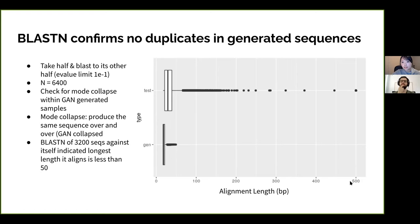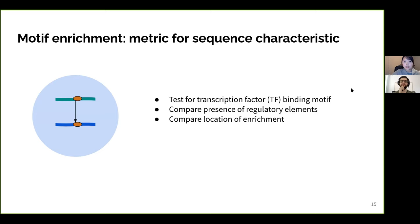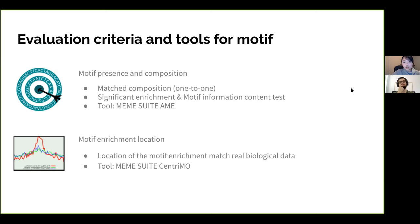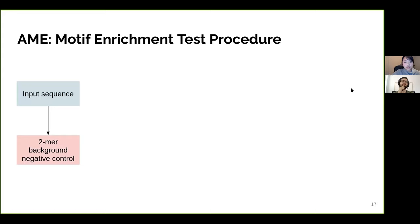Testing the generated sequence against itself also shows very little overlap, confirming no mode collapse — the GAN generates diverse enough samples. Some test samples fall within 500 base pair alignments because forward and reverse complements are included in the BLAST analysis. For sequence composition, I test for motif enrichment using two tools: AME, which tests motif composition from the JASPAR database, and CentriMo, which tests enrichment location.